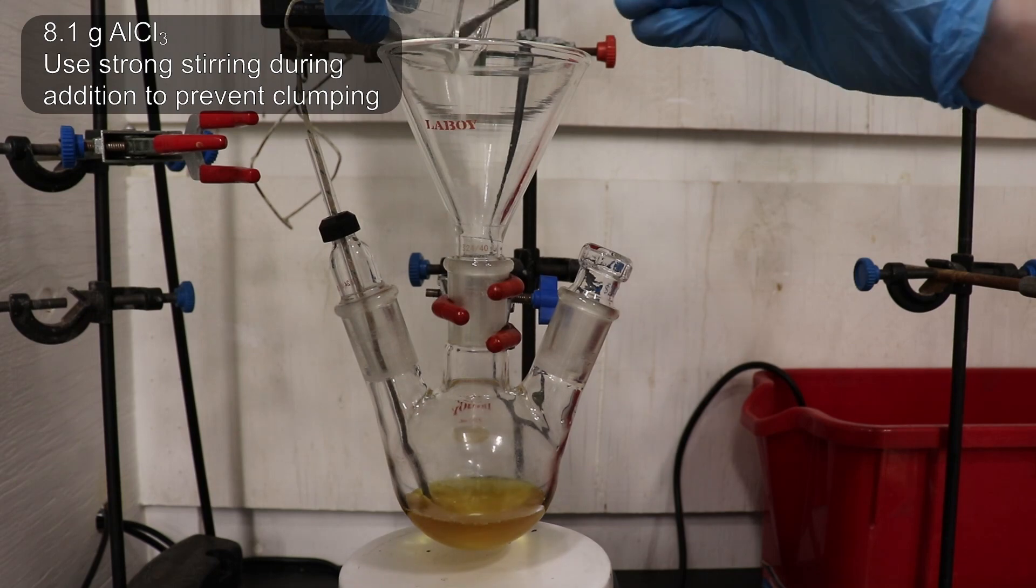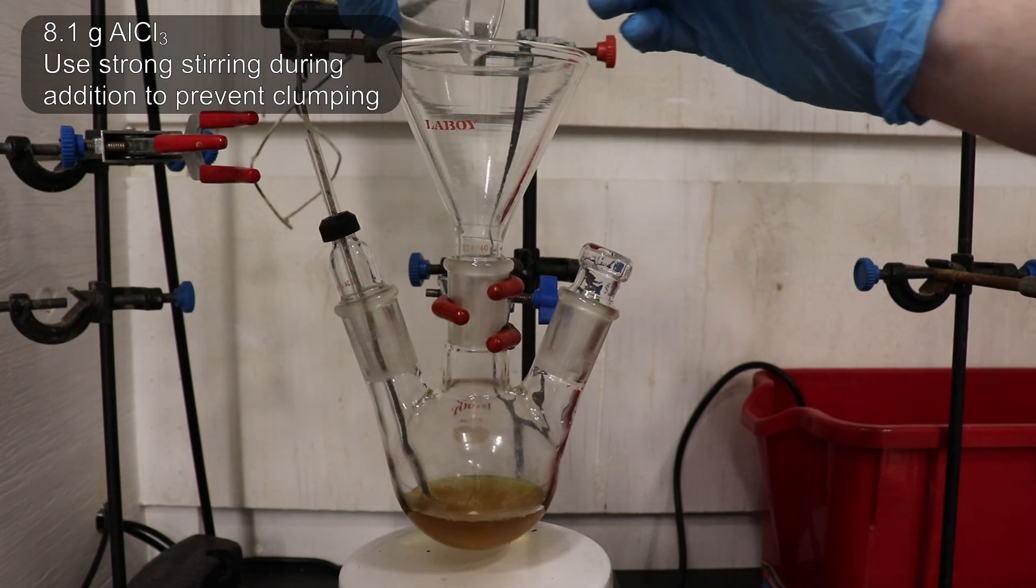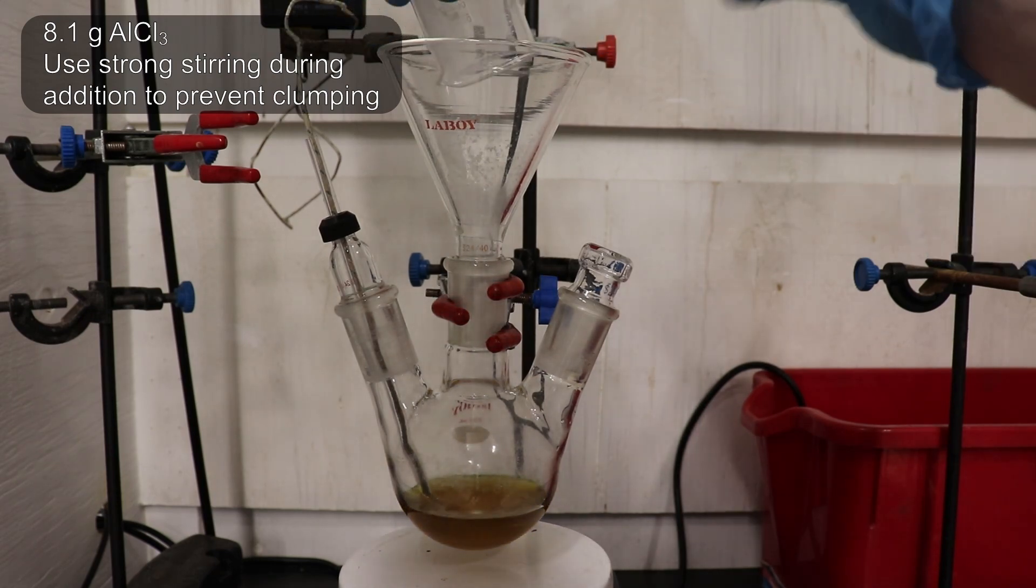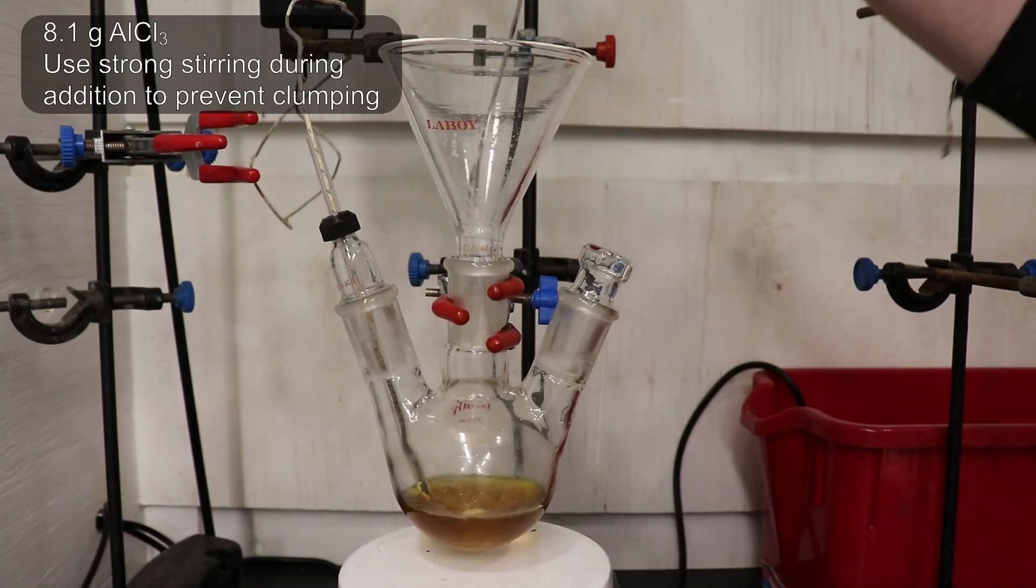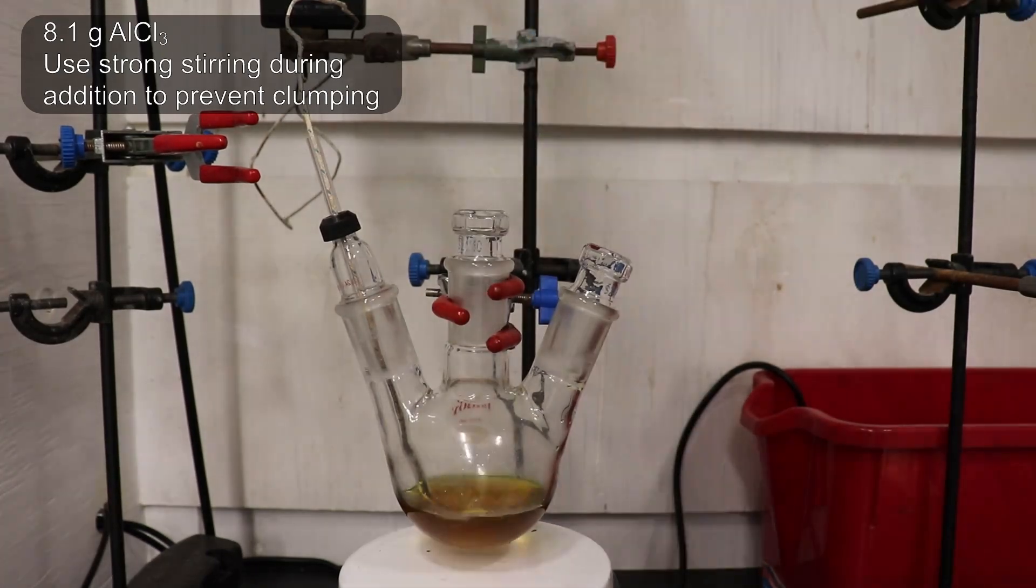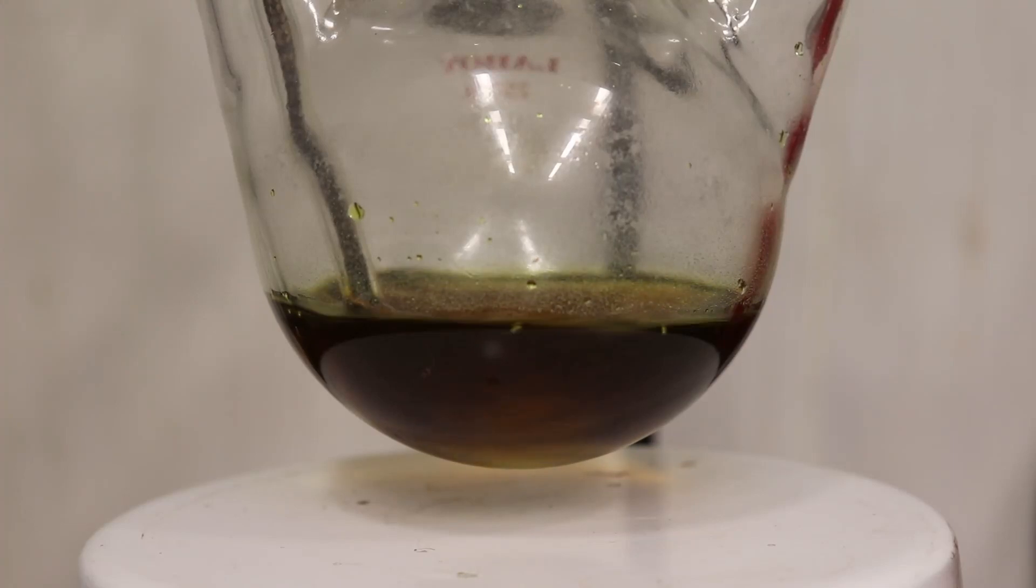So then, with strong stirring, 8.1 grams of aluminum trichloride was added to the nitrobenzene and allowed to fully dissolve. Remember to minimize the handling time of aluminum trichloride in air, as it is sensitive to atmospheric moisture.